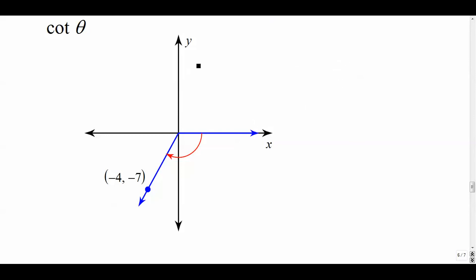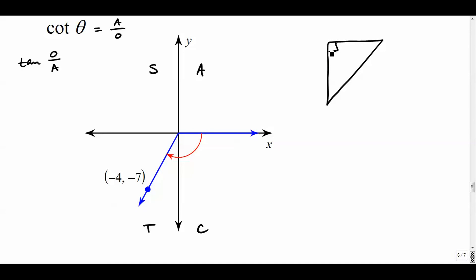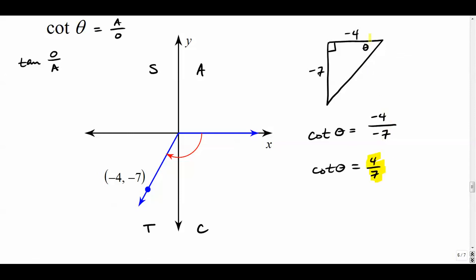Last one: a third quadrant angle. Tangent and cotangent are positive in quadrant three, so this will be positive. Cotangent is the reciprocal of tangent — if tangent is opposite over adjacent, cotangent is adjacent over opposite. The triangle goes left 4 and down 7, so cotangent of theta is 4 over 7. Tangent and cotangent have nothing to do with the hypotenuse, so it doesn't matter that it's missing. If you needed sine, cosine, cosecant, or secant you would have to find the hypotenuse. Those are a few quick examples of how to find trig values when given a point on the terminal side of an angle. Thanks for watching.